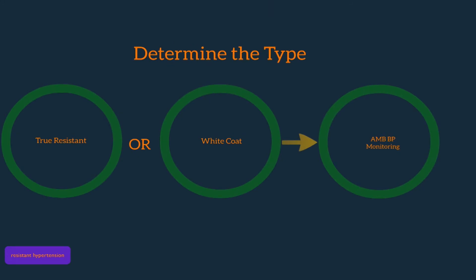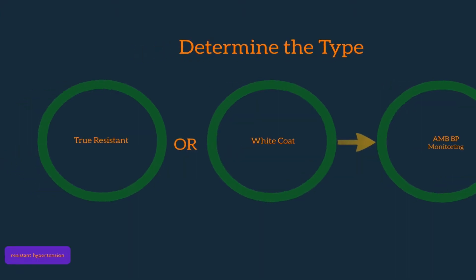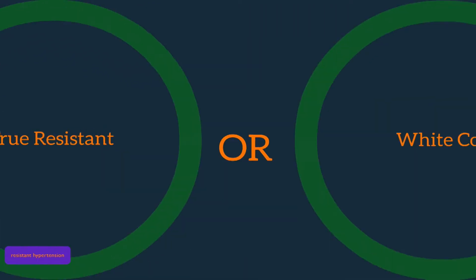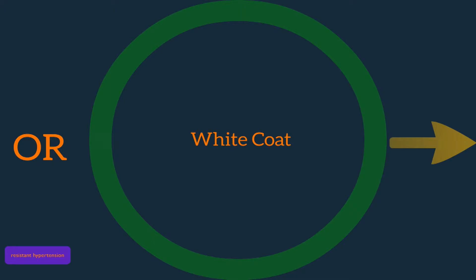The most important step in resistant hypertension management is to determine whether it's truly resistant. White coat hypertension and true resistant hypertension are often competing diagnoses. This diagnosis must be made by establishing the patient has true hypertension.